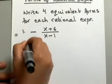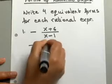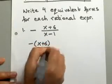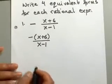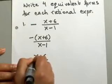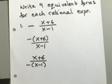So, to get one equivalent form, you can take that negative sign and put it on the numerator. So, that gives you one form. In the other form, you could take that negative sign and put it on the denominator. That gives you two forms.